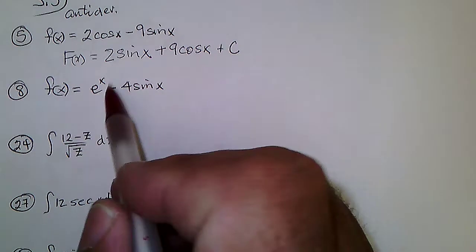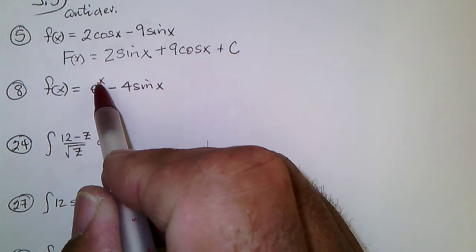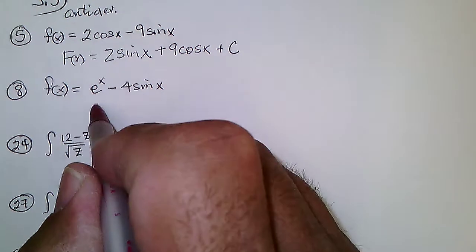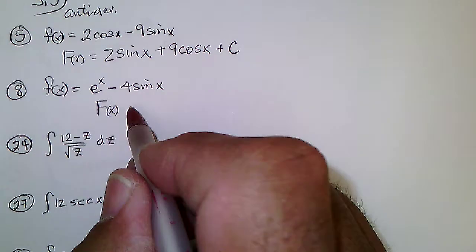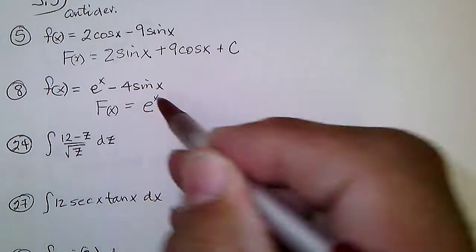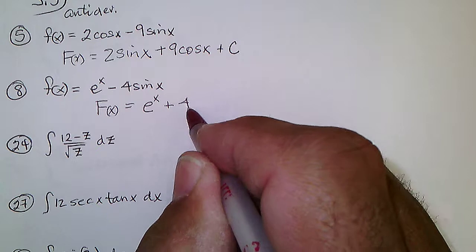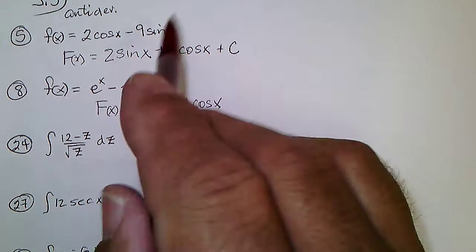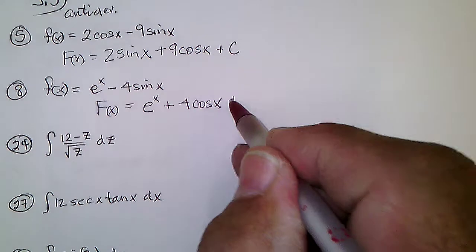Number 8: The integral of e to the x has to be e to the x, because the derivative of e to the x is the same thing. So the antiderivative of f of x will be e to the x, and this is going to be plus 4 cosine x — just like before with 9 cosine x — plus C.